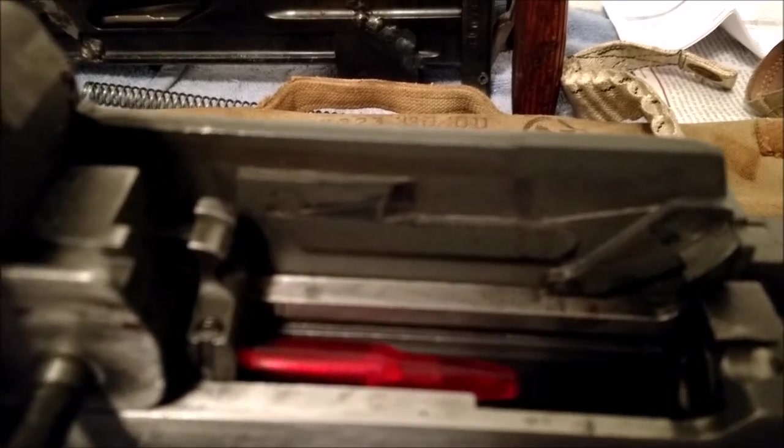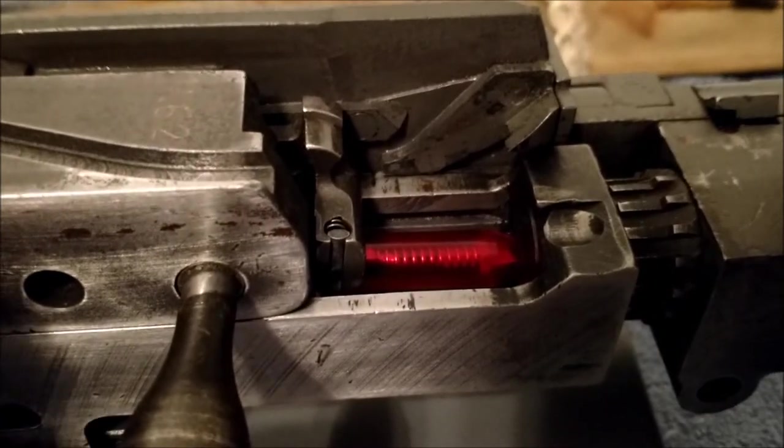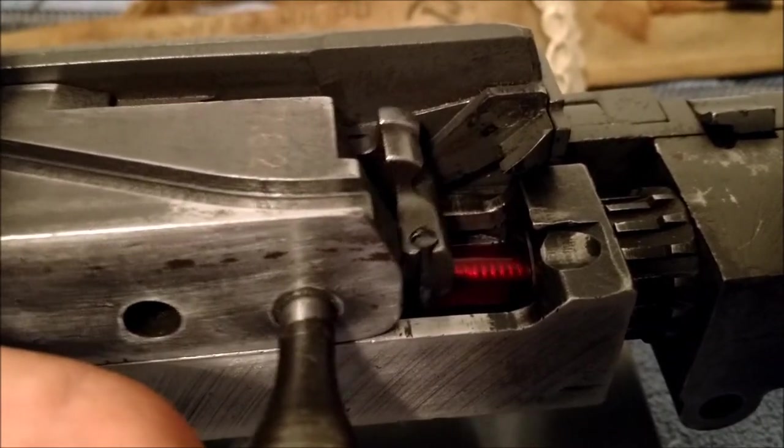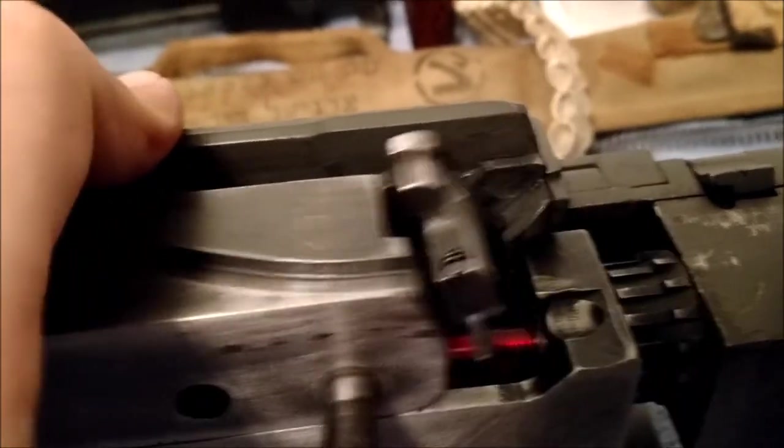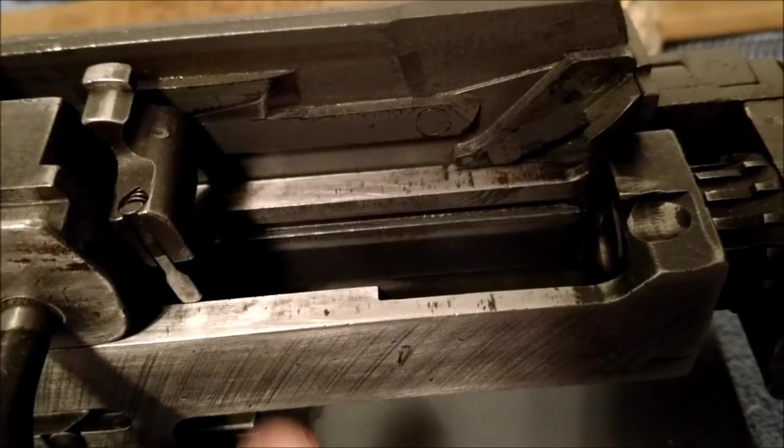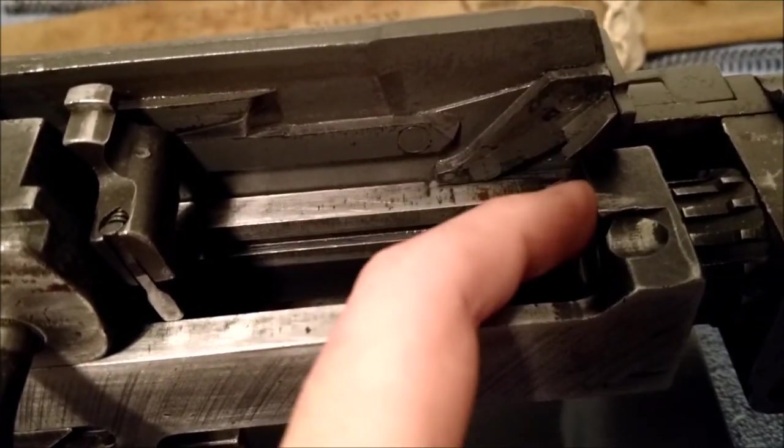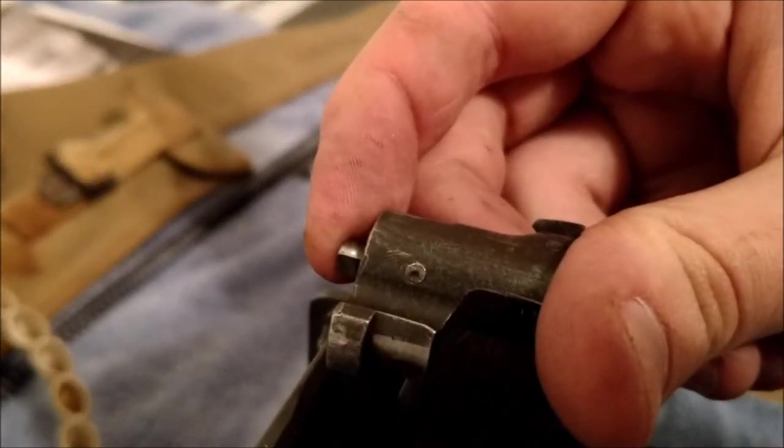The cartridge is being guided enough now that it doesn't need the extractor anymore. The extractor comes back up so it can go over the next round in the belt, and the process is continued. The round in the chamber simply falls out because it's only being held in by the T slot. So once the front of the case is out of the chamber mouth, it just slides right out.